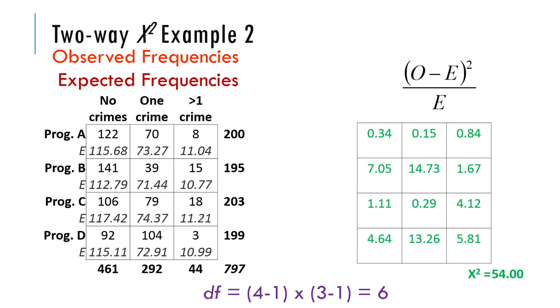You get 54. The degrees of freedom is the number of rows minus one times the number of columns minus one. Four rows, three columns, three times two is six. You're going to evaluate this 54 and say is that big enough? You have to find the chi-squared distribution with six degrees of freedom. Look in the table in the back of your book.